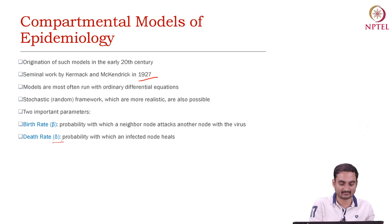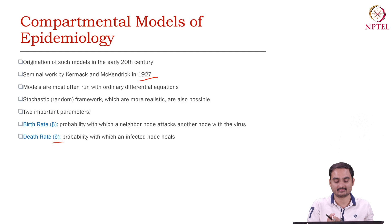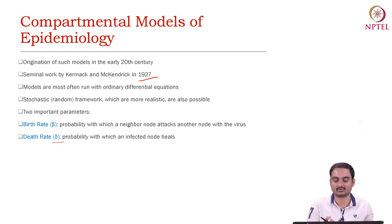And there is something called the death rate — the death rate of the virus — which is basically the probability with which an infected node heals, meaning the infected node gets cured.